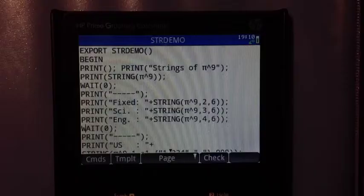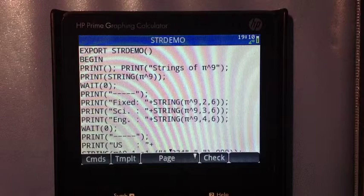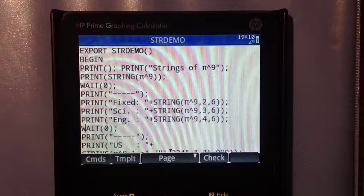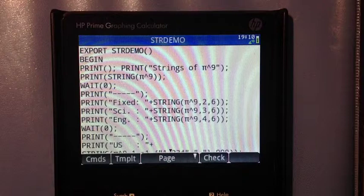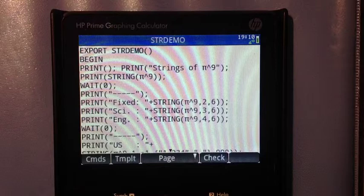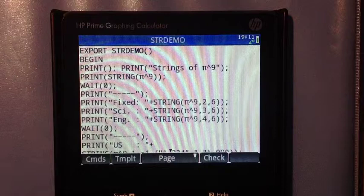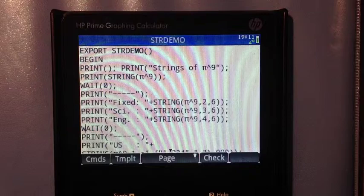Here is a program I'm going to run, strdemo, that illustrates the use of the string command. Here we're going to use pi to the ninth power. This first section is just going to take the string of that and we'll let the calculator take care of the formatting. The second section right here, we're going to specify what type of mode and precision that we are going to use. For this example, I'm going to use fixed scientific and engineering and use a decimal precision of 6.